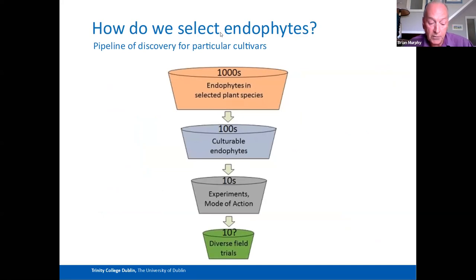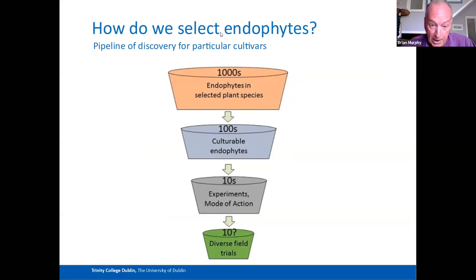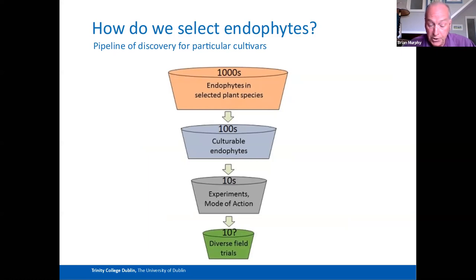So where do these endophytes come from and how do we select which ones to use? When we select a particular plant species of interest, we extract and isolate from the plant populations many hundreds or even thousands of endophytes. We then use a pipeline approach where we gradually narrow down the number of isolates based on a set of criteria at each stage, as illustrated here. We then end up with a small subset of the original isolates, which we think are worth pursuing.